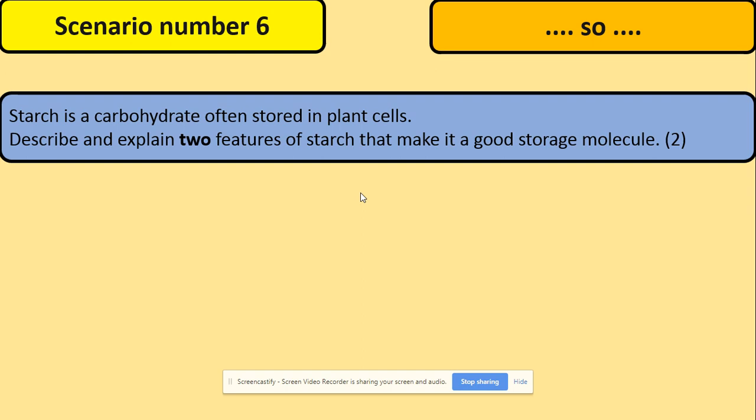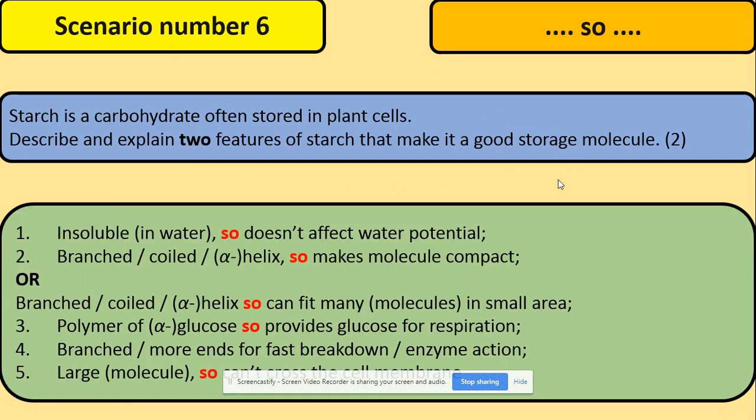The last scenario is the 'so what' approach — the typical question where describe and explain come together. For example: starch is a carbohydrate often stored in plant cells — describe and explain two features of starch that make it a good storage molecule. Describe means say what you can see; explain means use your biological knowledge to say why it's a good storage molecule. Use the 'so what' approach: statement, then explanation. What you can see — it's branched — so what — that makes it compact. What you can see — it's a polymer — so what — it provides glucose for respiration. So if you have describe and explain in one question: statement one is the description, then back it up with your biological knowledge as the explanation.